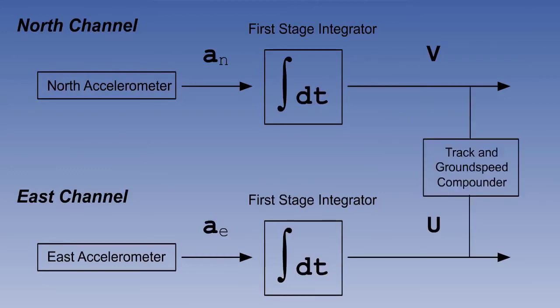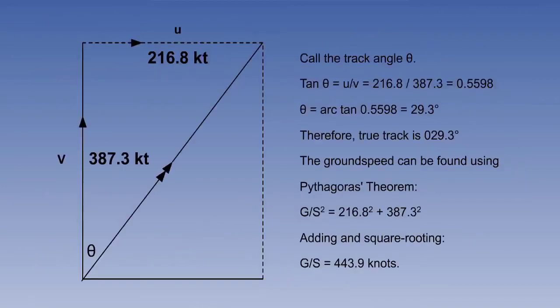These velocities will be integrated again shortly into distance gone, but even at this stage we can use them to get track and ground speed. The north and east velocities are passed to a compounder. A compounder is simply a computing device for taking velocities which have been resolved in two directions at 90 degrees to each other and calculating a resultant.